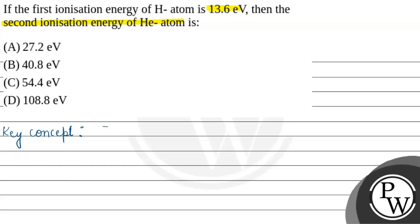The formula for ionization energy is 13.6 into Z square upon N square. We are given hydrogen and we have to calculate for helium.